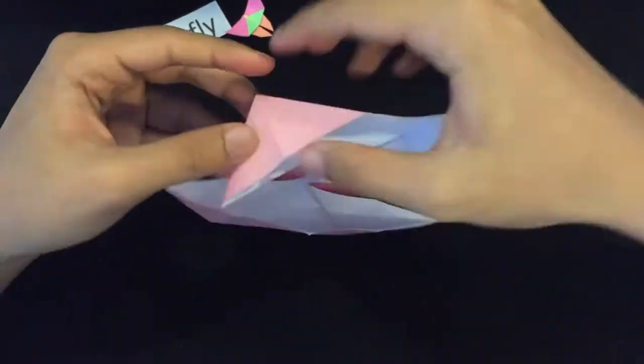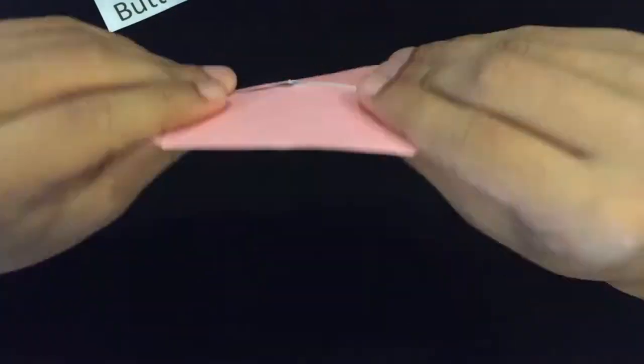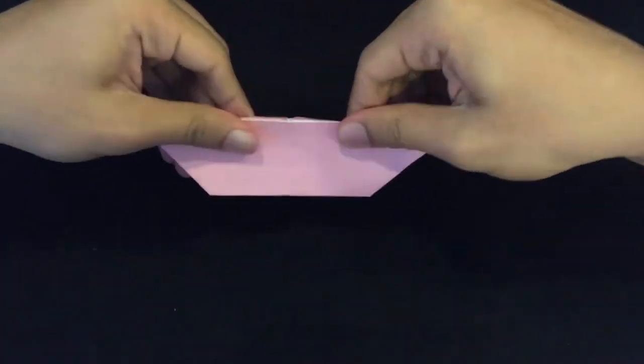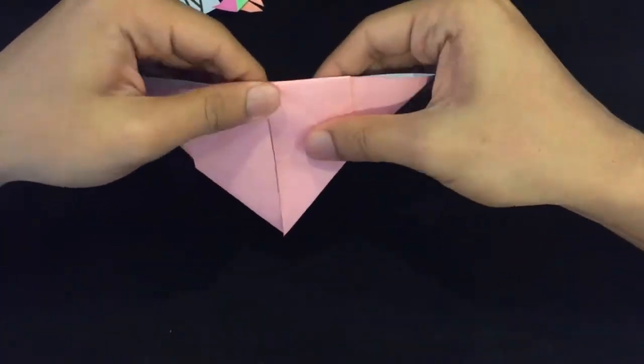The next step is to fold it in half in a manner that maintains a trapezoid shape. After that, you fold the top corner downward.